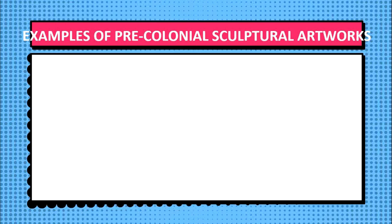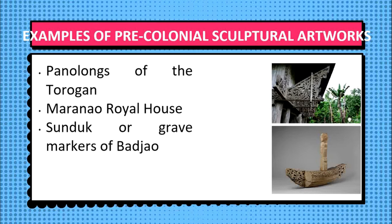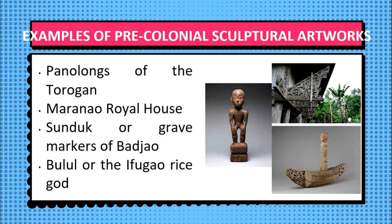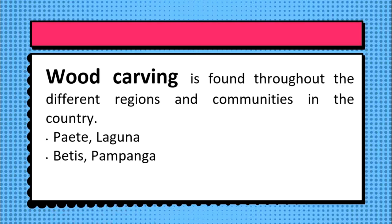The Philippines has a sculptural tradition dating long before the arrival of the first colonizers. Filipinos have long been casting metal, molding clay, and carving stone and wood to create various sculptural pieces. Examples of pre-colonial sculptural art forms include the panalong of the Maranao Royal House, the sundup or grave markers of the Bajau, and the many interpretations of the Ifugao rice god, the Bulul. Wood carving is found throughout different regions of the country, used to decorate items used in daily life such as furniture, utensils, shelter, and transportation. This tradition is still alive in many communities such as Paete, Laguna and Betis, Pampanga.